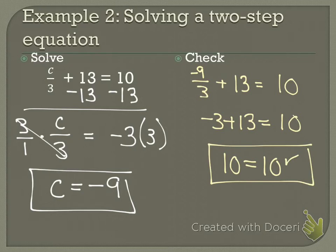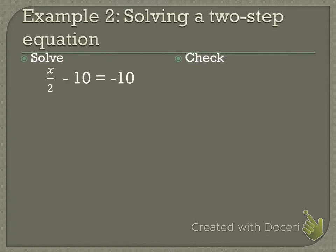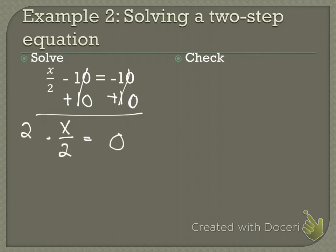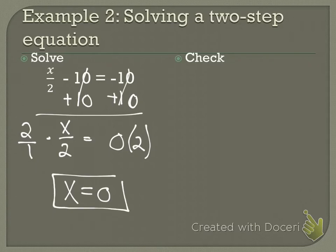You think you can do one? You can do it. Anybody have a question on this one? x over 2 minus 10 equals negative 10. So what do you do first? You add 10 to both sides. What's negative 10 plus 10? Zero. So x over 2 equals 0. When you multiply 0 by 2, what do you get? Zero. X equals 0. And 0 can be my answer.